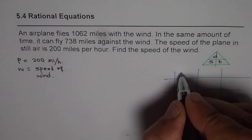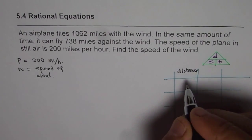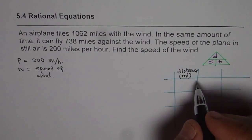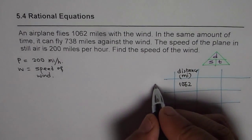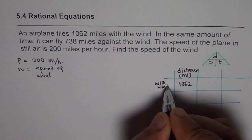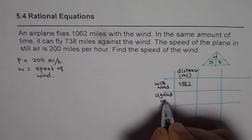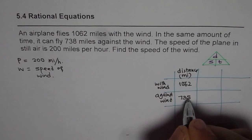So we know distance here is, let us say distance, which is given to us in miles. So there is no problem in writing units here itself. It is 1062 when the plane flies with wind. And against wind, the distance is 738 miles.